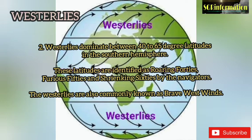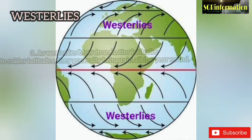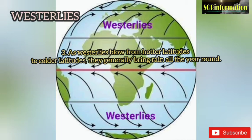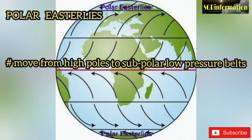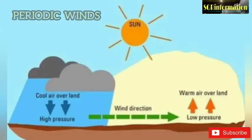The westerlies are also commonly known as brave west winds. Number three, as westerlies blow from hotter latitudes to colder latitudes, they generally bring rain all year round. Polar easterlies move from high poles to subpolar low pressure belts; these are deflected by the earth's rotation to become east winds, or the polar easterlies.